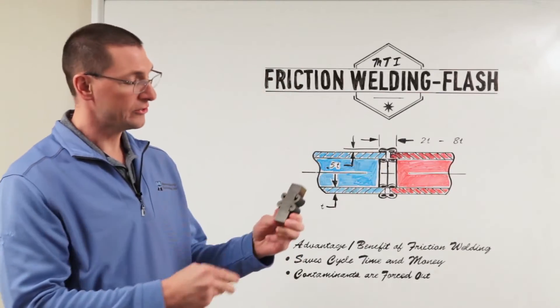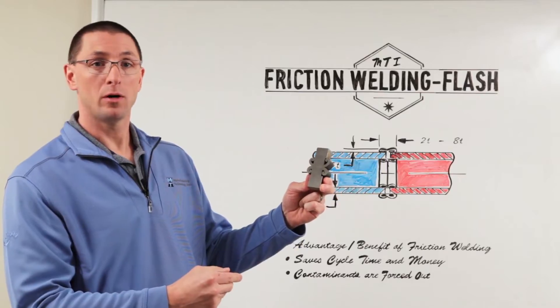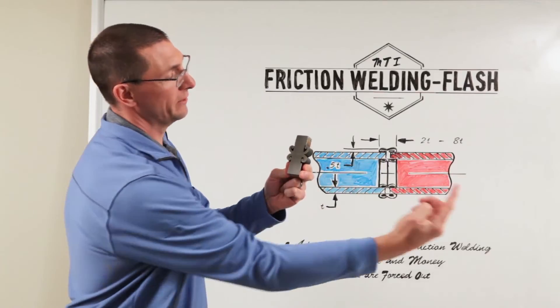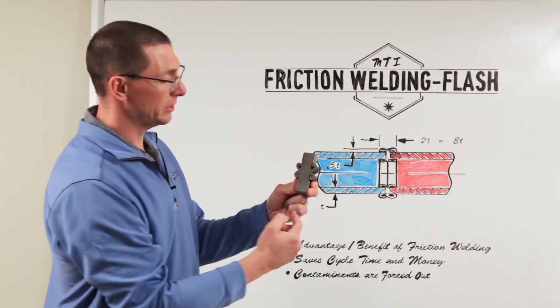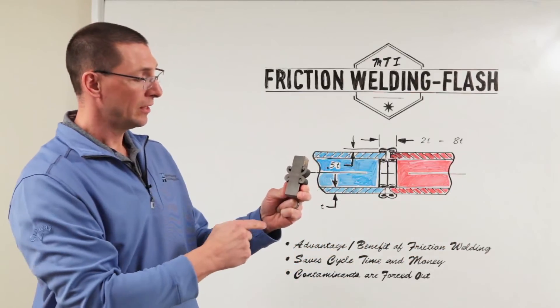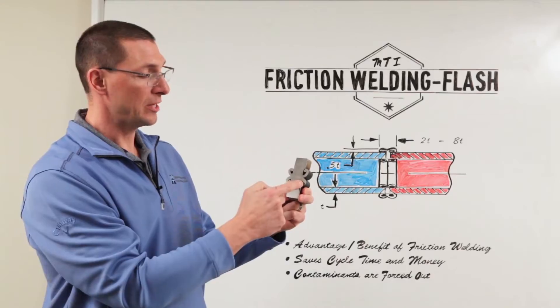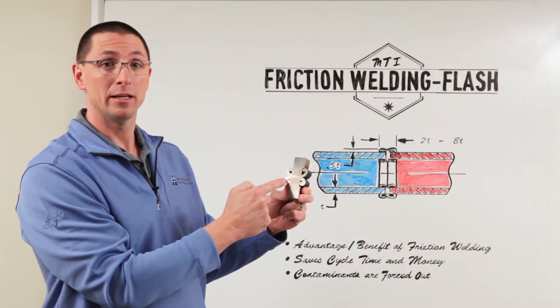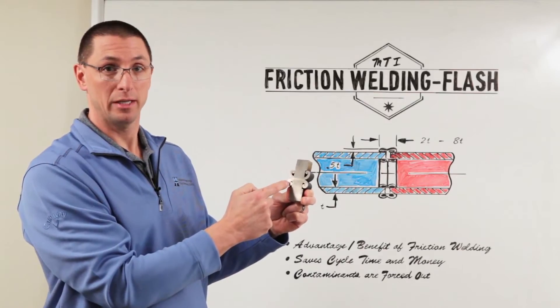Here's a section view out of a thick wall large diameter tube. This might be 15 inches in diameter. The flash formation on the OD and the ID is volumetrically equal.